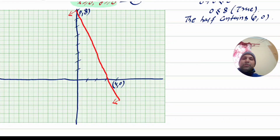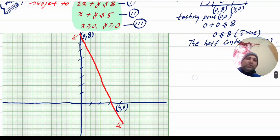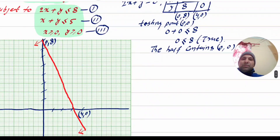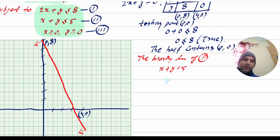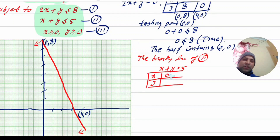For the second inequality, we go to the boundary line. The second inequality boundary line is x plus y is equal to 5. We set up a table: when x equals 0, y value is 5; when y equals 0, x value is 5.